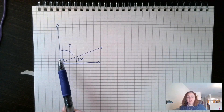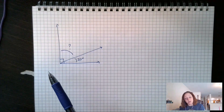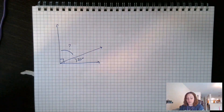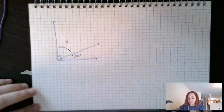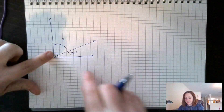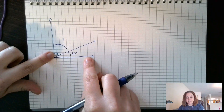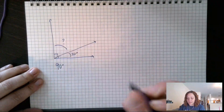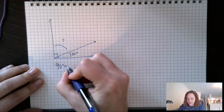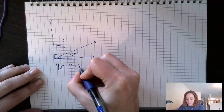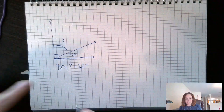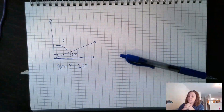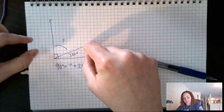We want to know what the unknown angle is. We don't need a protractor — we've been given all the information we need. The whole thing from here to here is 90 degrees because it's labeled as a right angle. So our unknown angle plus the 20 degree angle equals 90 degrees.